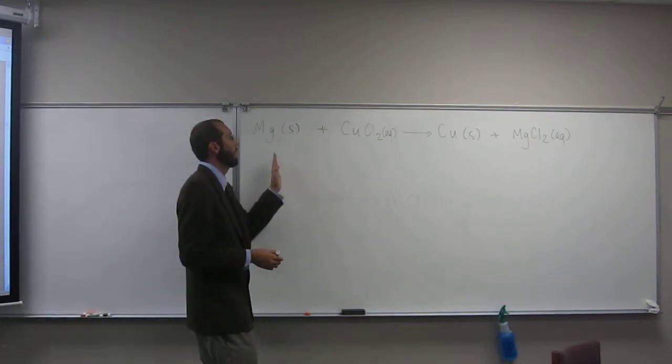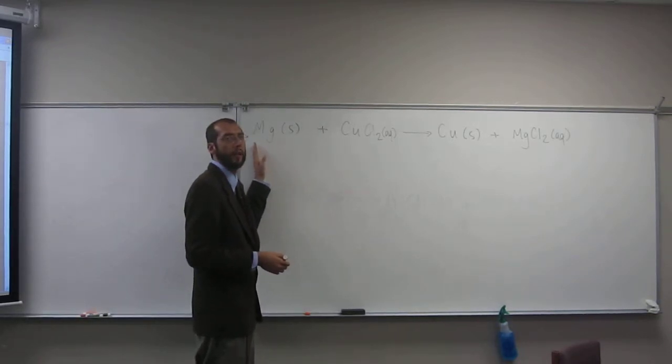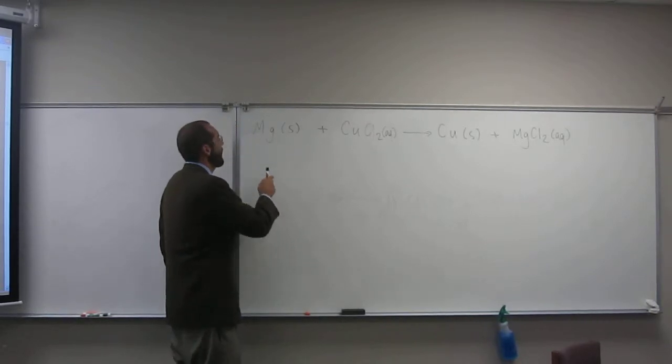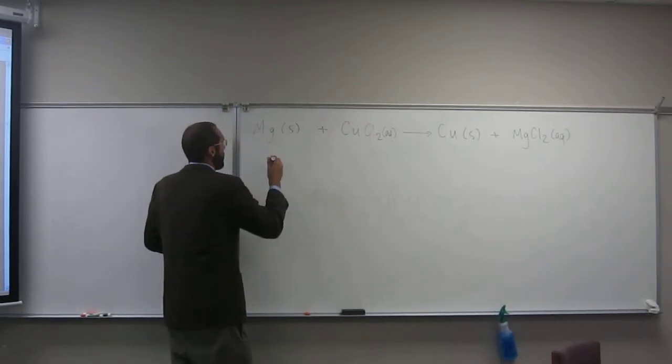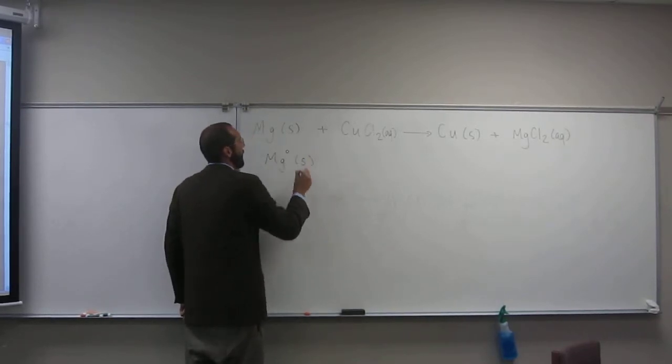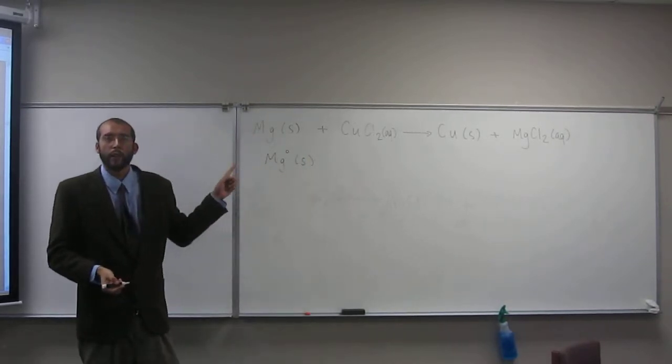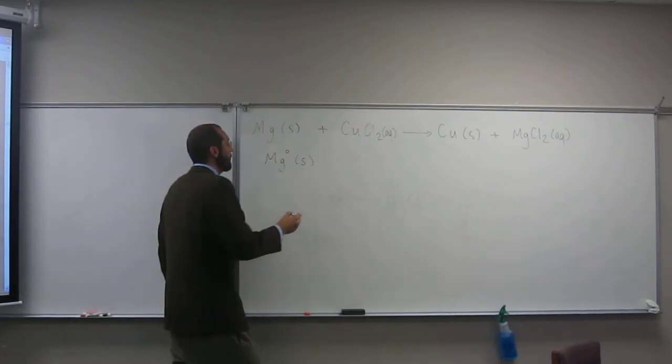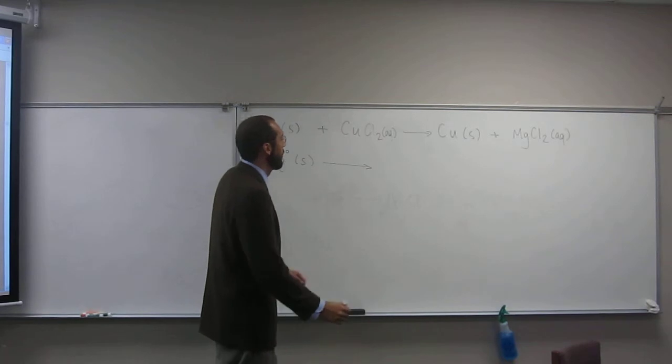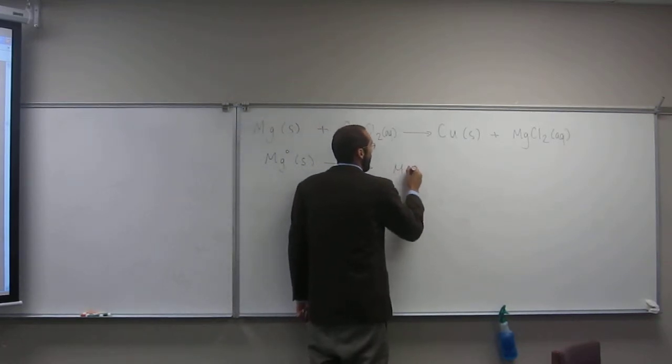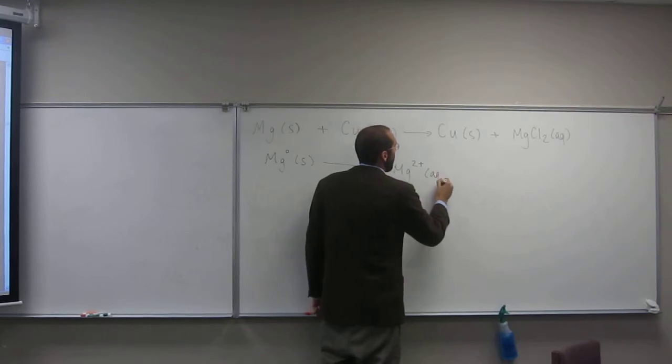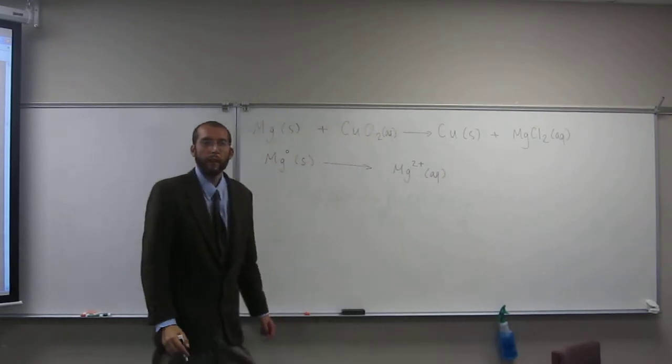So the first thing we want to look at is what the two ions, or the two metals, have done, right? So what we're seeing here is magnesium is starting at a zero oxidation state, and it's going to a +2 oxidation state, like that.